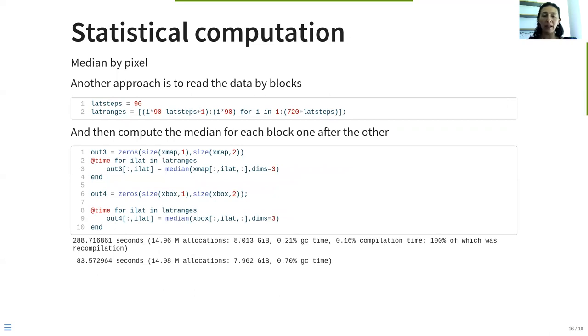There is another approach to do it more efficiently, and that is if we read the data by blocks. So we read first one block, we compute the median, and then we continue with the next block. This is actually what we do with a good chunking size from the beginning.